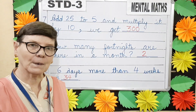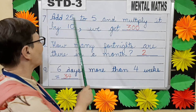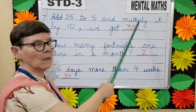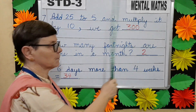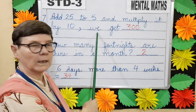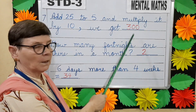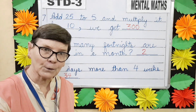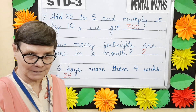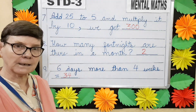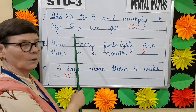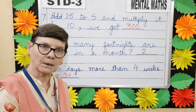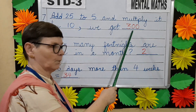Question number seven. Add twenty-five to five and multiply it by ten — we get dash. Twenty-five plus five will give you thirty. Thirty multiplied by ten will give you three hundred.